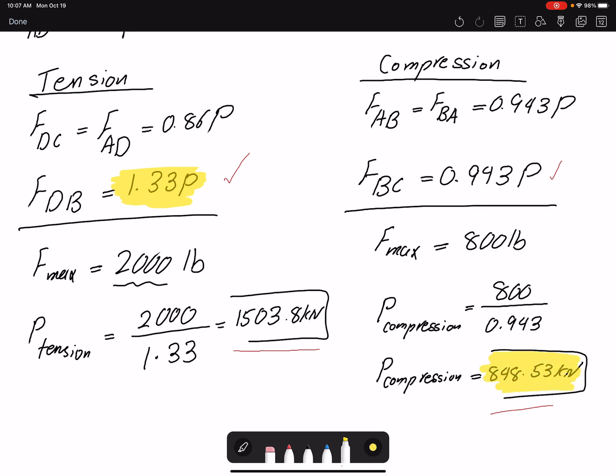If we apply more than this, our member BC will fail. So we have to apply a force less than that. And that would be our answer to this question, 848 pounds.